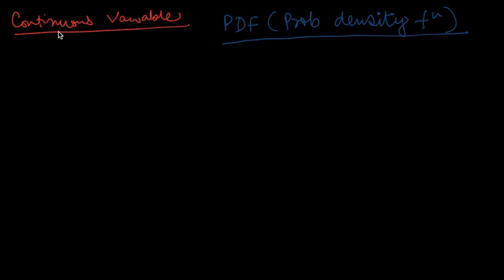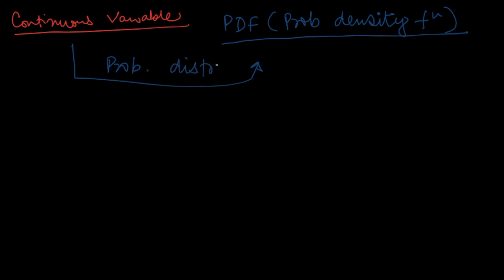In one line, the probability density function is the probability distribution of a continuous random variable. If I plot the probability distribution of a continuous variable, it gives me the probability density function. So PDF is nothing but the probability distribution of a continuous variable.